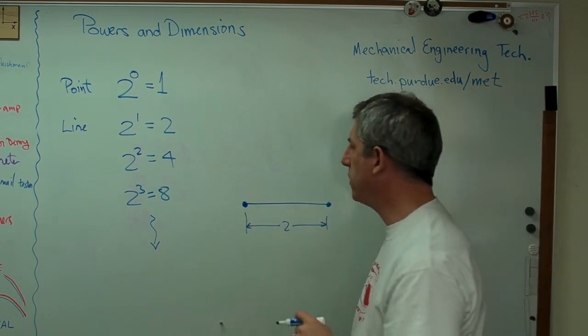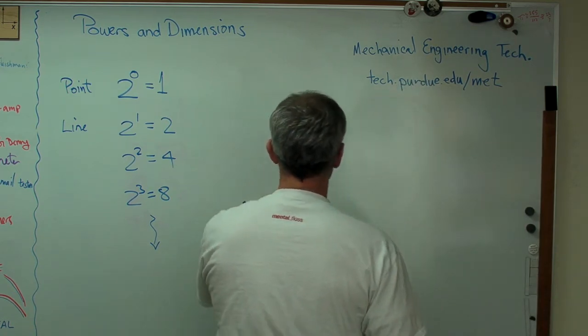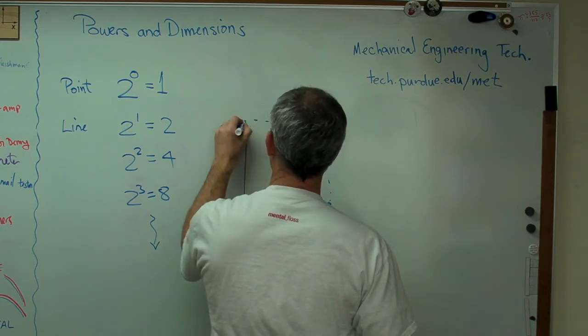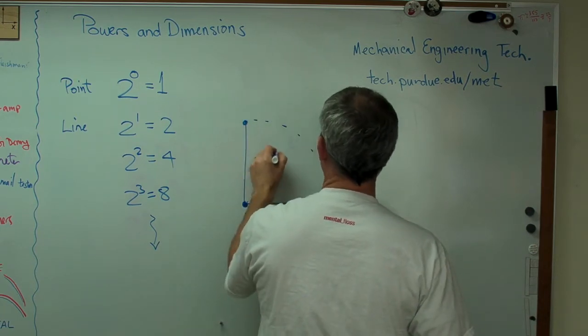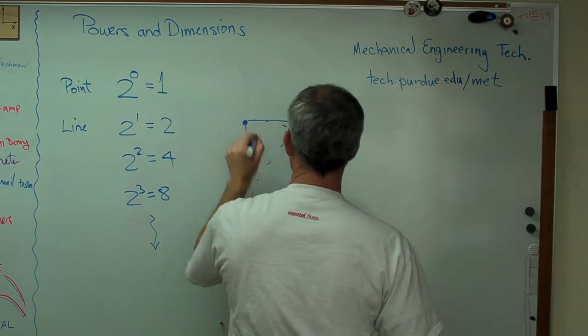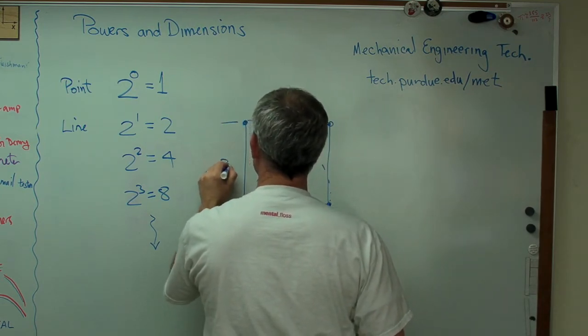What's a two-dimensional object? Well that might be a square. Let's just do that. Let's rotate this line up like that and rotate that line up like that and connect that. Okay, so I've got a square now and it's the same distance on both sides.